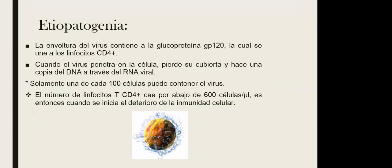Solamente una de cada 100 linfocitos va a poder contener la infección, y esto va a provocar que el número de linfocitos T caiga por debajo de 600 células por microlitro. Esto ya se considera una inmunosupresión importante, porque el conteo normal va de 800 a 1050 células por microlitro. La infección más grave ocurre cuando cae por debajo de 600 células por microlitro.